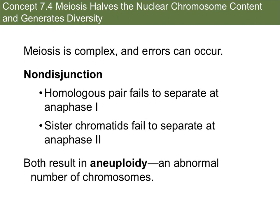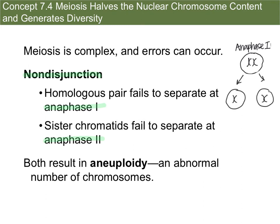In the two divisions of meiosis, this is a very complex process, and there are errors that can occur. One of the most discussed errors is non-disjunction — the failure of chromosomes or chromatids to separate properly. This can occur at two places: anaphase one and anaphase two. In anaphase one, chromosomes lined up as homologous pairs should separate — one homologous pair to each daughter cell — but sometimes these homologous pairs fail to separate and stay together as they're pulled to one daughter cell.